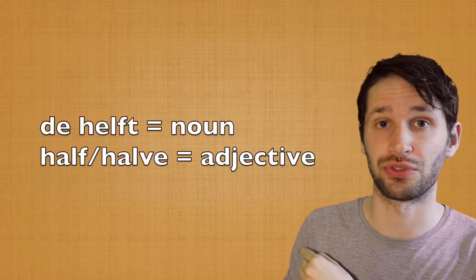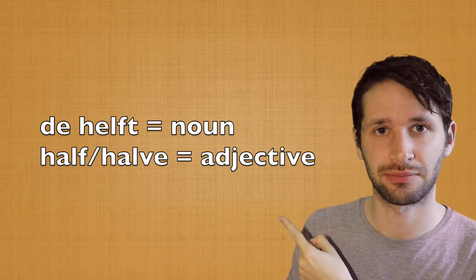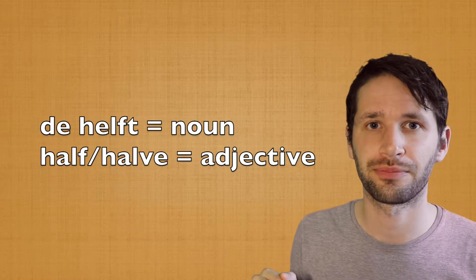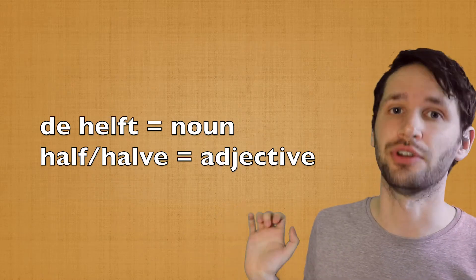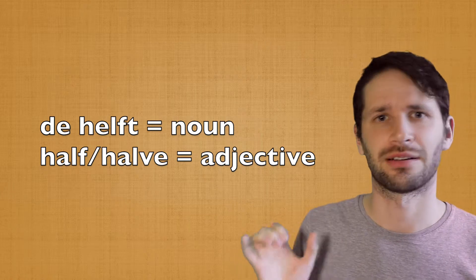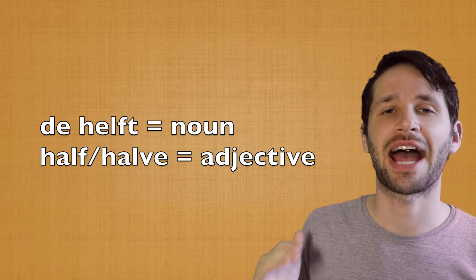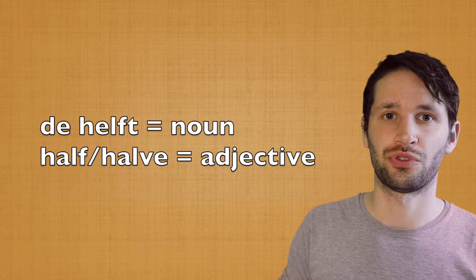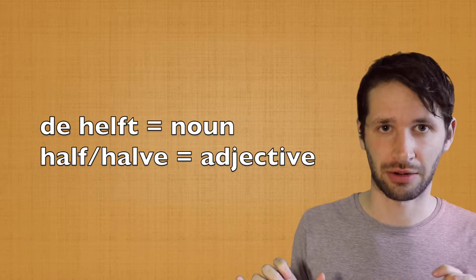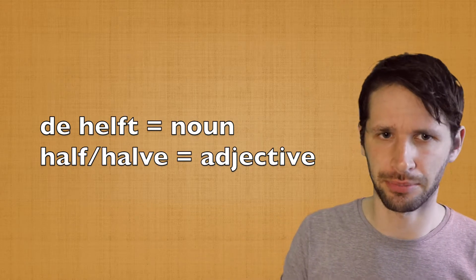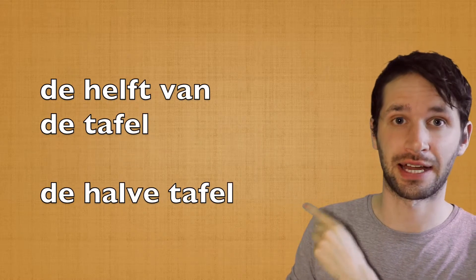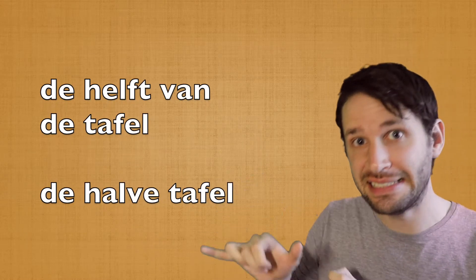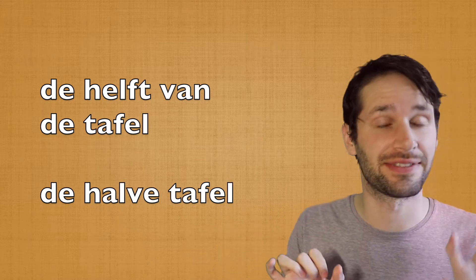It's rather simple. Helft is a noun, so you say de helft. And halve means half and is the adjective, so you put the adjective with another noun. Let's take a few examples. De helft van de tafel — that means the half of the table.